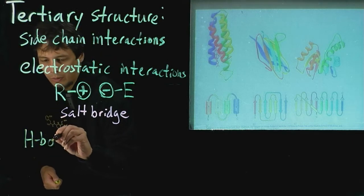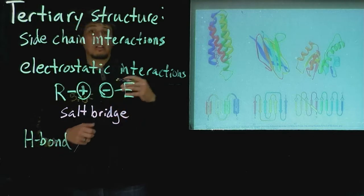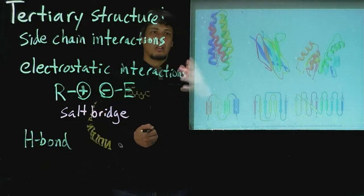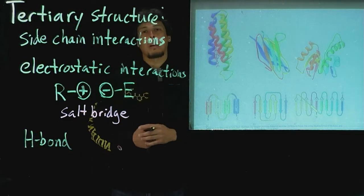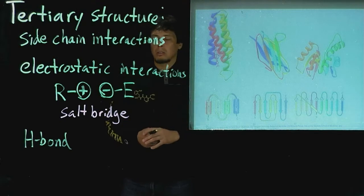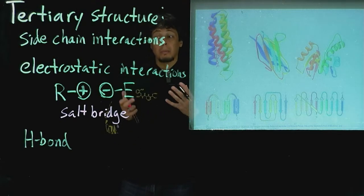And the side chain can also, for instance, hydrogen bond to something in the peptide backbone, such as the NH or the carboxyl group, or the amide, or the peptide bond.